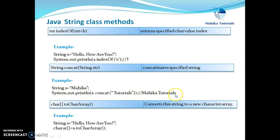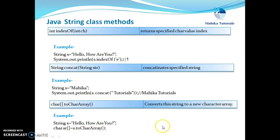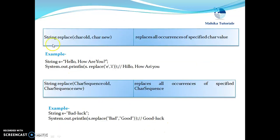The next method is toCharArray. This method converts the given string to a new character array. If we have string s equals 'hello how are you' and if we say s.toCharArray(), this string object s will be converted to a char array. So whenever we have to convert a string into a character array we can make use of this method.